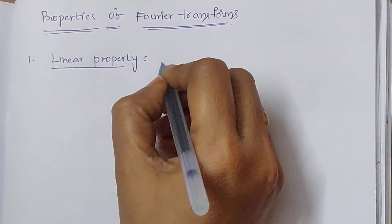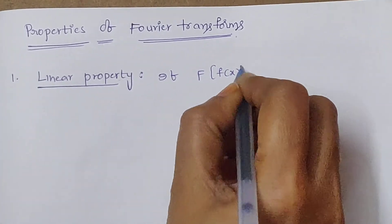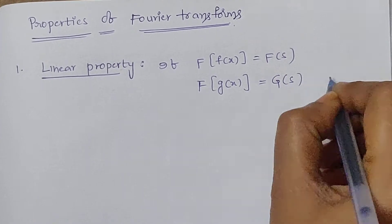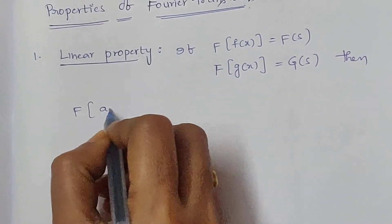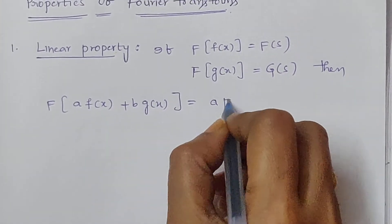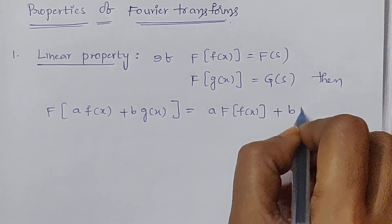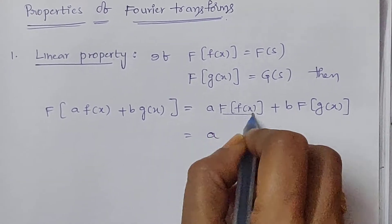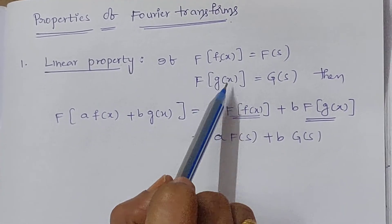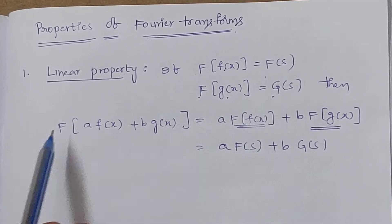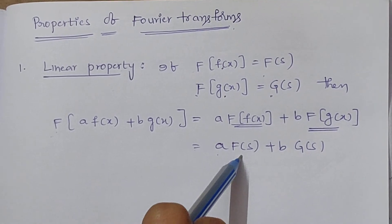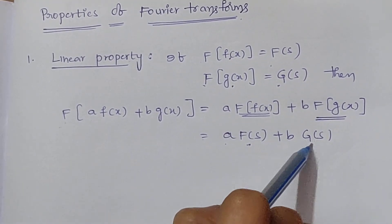The linear property states: if the Fourier transform of the function f of x equals capital F of s, and the Fourier transform of the function g of x equals capital G of s, then the Fourier transform of a times f of x plus b times g of x equals a times the Fourier transform of f of x plus b times the Fourier transform of g of x.